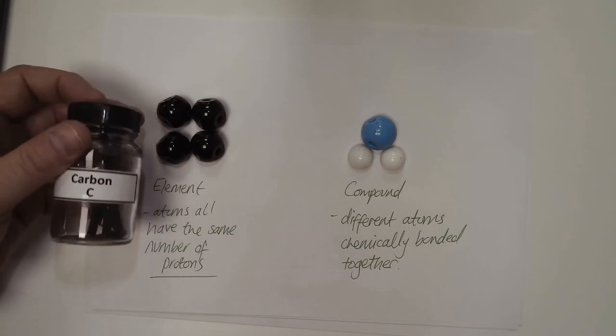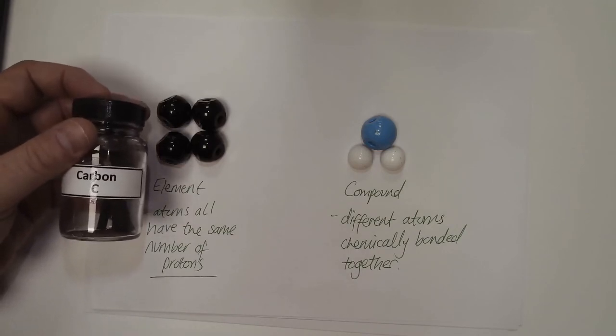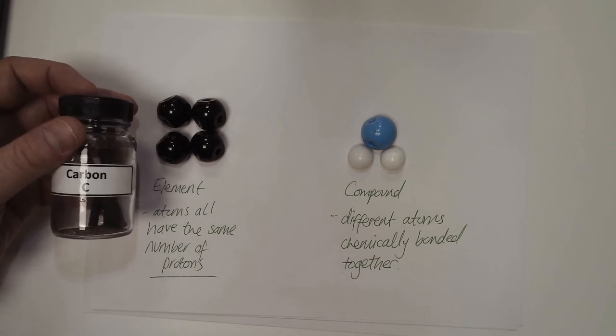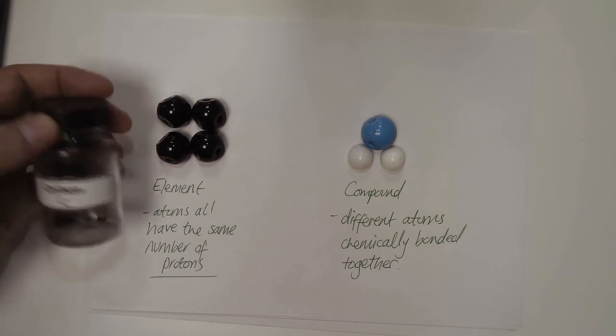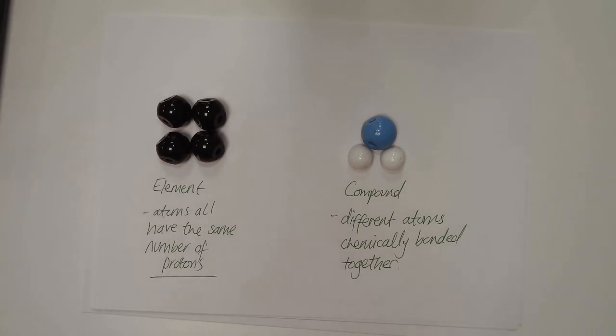It's an element, it's found on the periodic table. All of the atoms within that sample of carbon in there would have the same number of protons. Now these differ from compounds and on the diagram you can see there I've got a very basic representation of a compound to the right hand side.